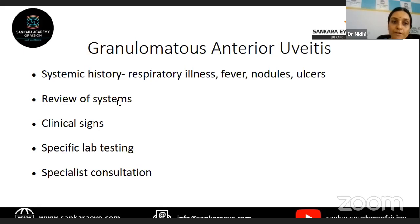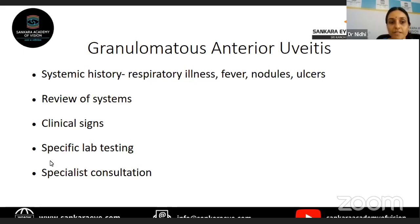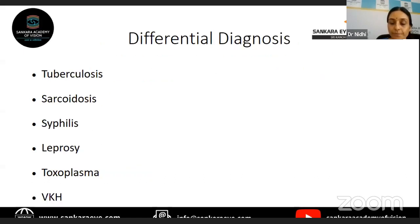Presence of respiratory illness, fever, nodules, and skin ulcers — review of systems is important in these patients. Depending on what symptoms you get, you can send the patient to a specialist. If the patient has chest symptoms, send to a pulmonologist. If they complain of skin ulcers or rashes, a venereal disease specialist might be required. So depending on that, you can take a specialist opinion and specific lab tests. If you suspect a pulmonary illness associated with granulomatous uveitis, you will think of ruling out sarcoidosis and tuberculosis as your first differential diagnosis.